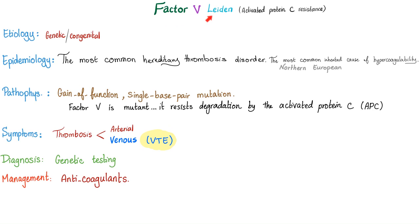Some bullet points. Factor V Leiden is a synonym for activated protein C resistance. Etiology: genetic or congenital. Epidemiology: the most common hereditary thrombosis disorder and the most common inherited cause of hypercoagulability. Most patients are of Northern European descent — similar to cystic fibrosis in pulmonology and hereditary spherocytosis in hematology.